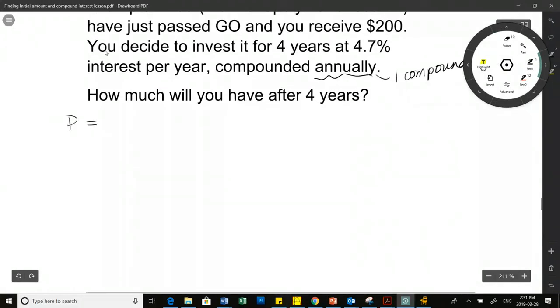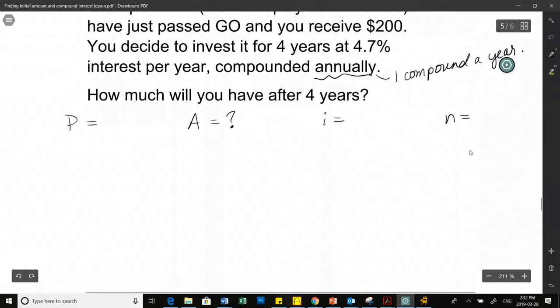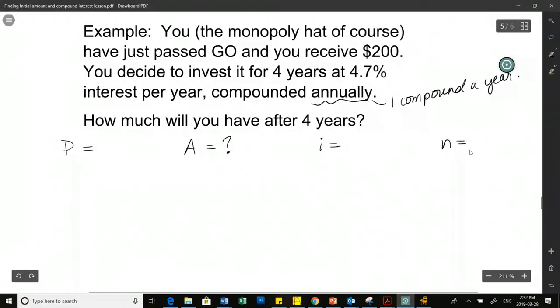So let's enter into our formula. We have capital P, capital A, i, and n. If this is asking us how much we'll have after four years, that is our future value, that's our capital A in our compound interest formula. How much do we invest? What's our principal amount here? $200 is our principal amount.